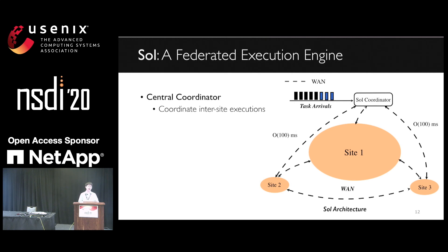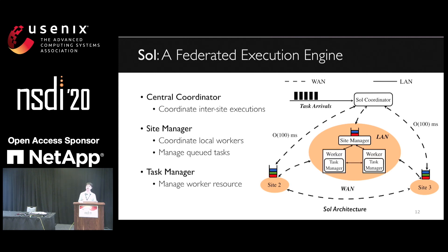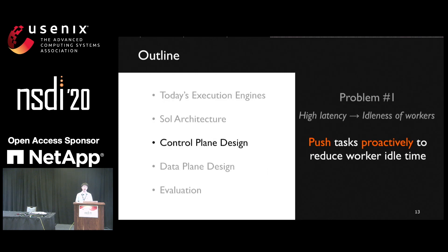We introduced the system architecture in a wide area setting, but it can also embrace the setting inside a single cluster. The top is the central coordinator, which handles task arrivals and orchestrates job executions across multiple sites. In each site, there is a site manager which manages a queue of tasks. In case of high latency networks, the coordinator will push tasks to the remote site, and the site manager will manage these queued tasks. The bottom is the worker, where a task manager is in charge of the physical resources.